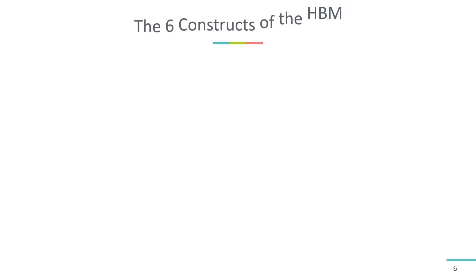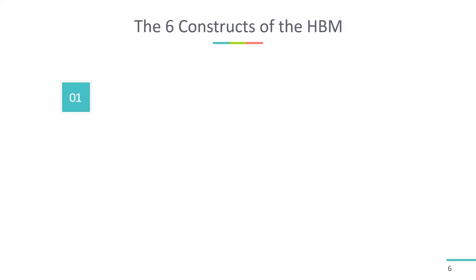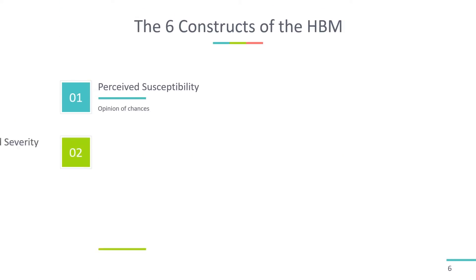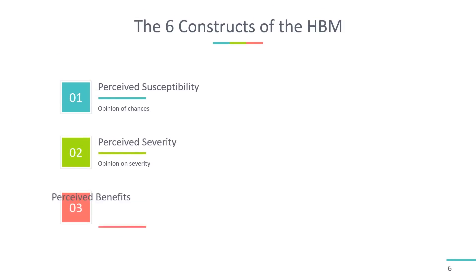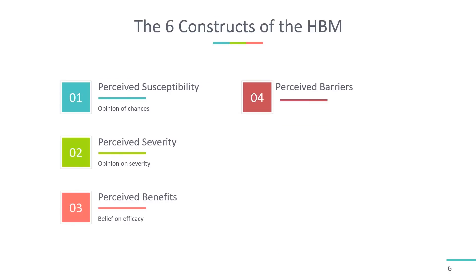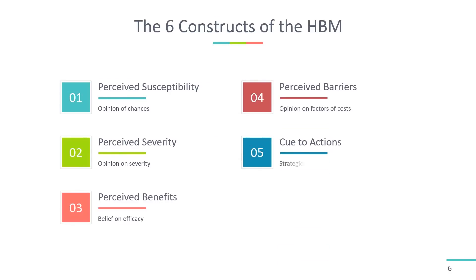There are six constructs of the Health Belief Model. The first four constructs were developed as the original tenet of the Health Belief Model. The last two were added as research about the Health Belief Model evolved.